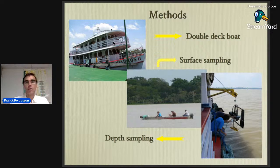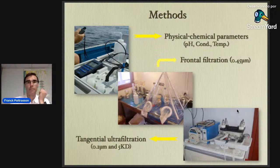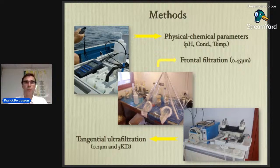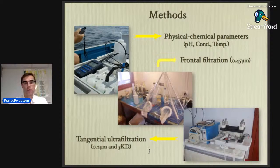In terms of methods, we used boats to do the field trips, with surface sampling on smaller boats to avoid contamination from the main boat. For deep sampling we used tools originally devised by oceanographers. On board we did many water treatment steps: physical and chemical parameter measurements — pH, conductivity, temperature — frontal filtration on board, trying to be as clean as possible. On some occasions we even did tangential ultrafiltration, work done with Thierry Allard from IPMC on a cruise we did together.